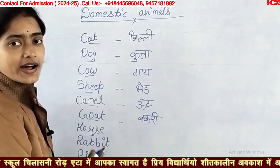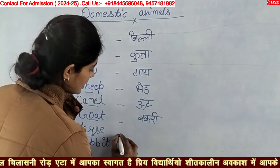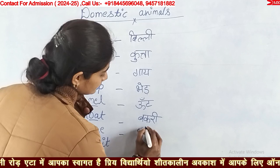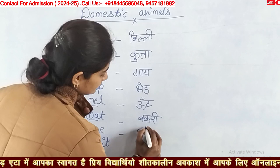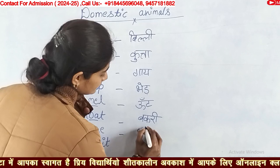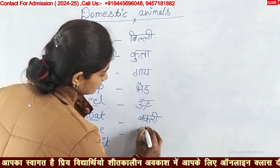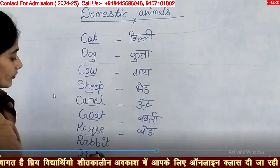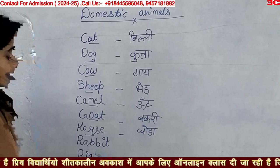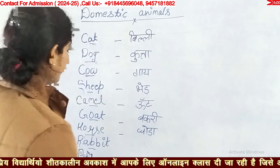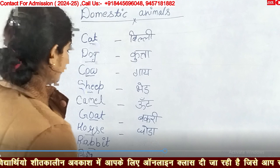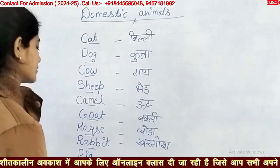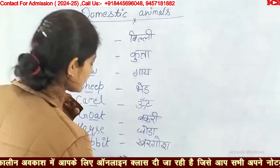Horse — H-O-R-S-E — horse means ghoda. Rabbit — R-A-B-B-I-T — rabbit means khargosh. Pig — pig means suar.